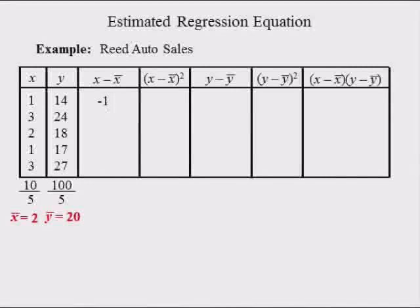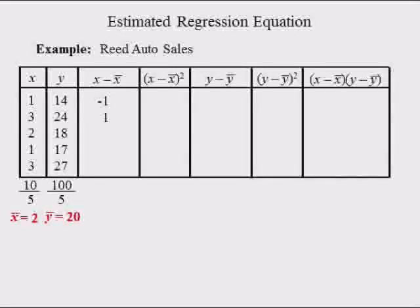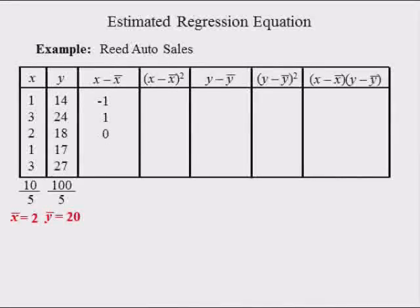The first deviation from the sample mean for variable X is found by subtracting the first observation of X, 1, from X-bar, 2. This difference is equal to 1 minus 2 or negative 1. The second deviation from the sample mean for variable X is found by subtracting the second observation of X, 3, from X-bar, 2. This difference is equal to 3 minus 2 or 1. The third deviation from the sample mean is equal to 0 because the third observation of X is 2 and the sample mean is 2.